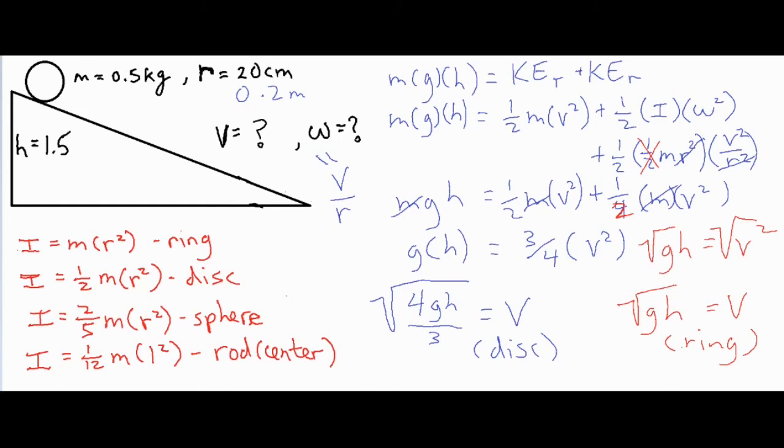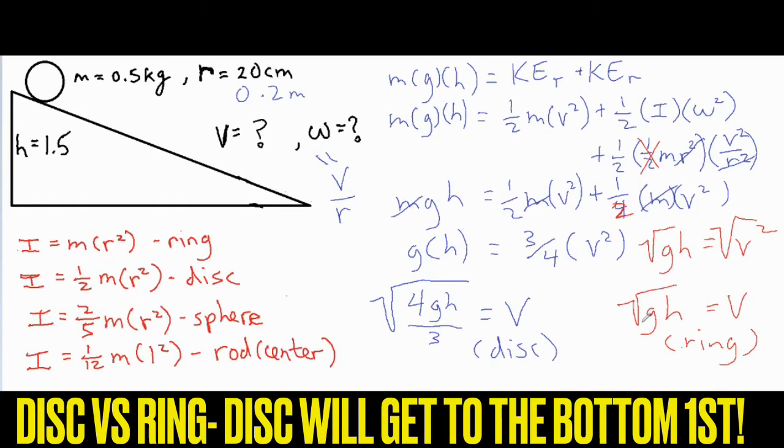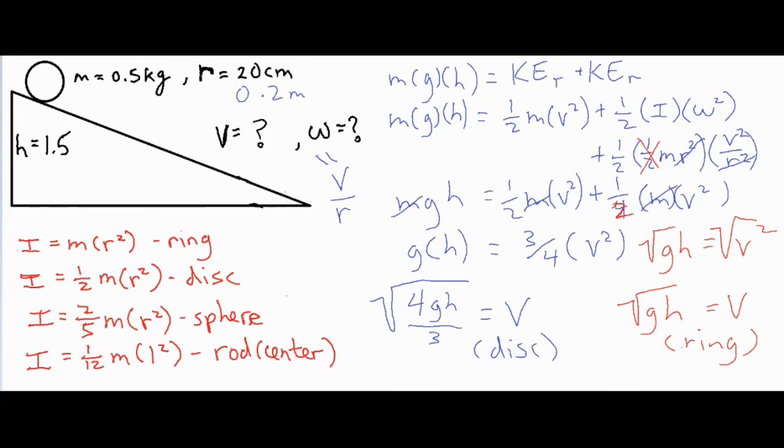Okay, so when you plug in 9.8 and your height, you will for sure get a linear velocity that is less than the disc because the coefficient is less. So there's basically an invisible 1 here, so 1 times gh. This one is 4/3 times gh. So because that coefficient is larger than 1, you will definitely have a higher linear velocity and a higher rotational velocity because the rotational velocity is v over r. Both of them have the same r, so if this one has a greater v it definitely has a greater ω value.